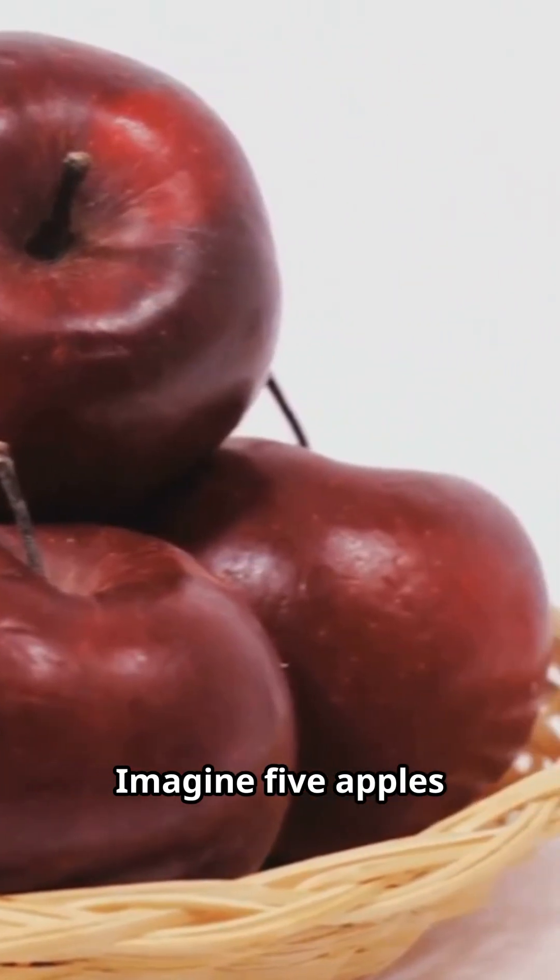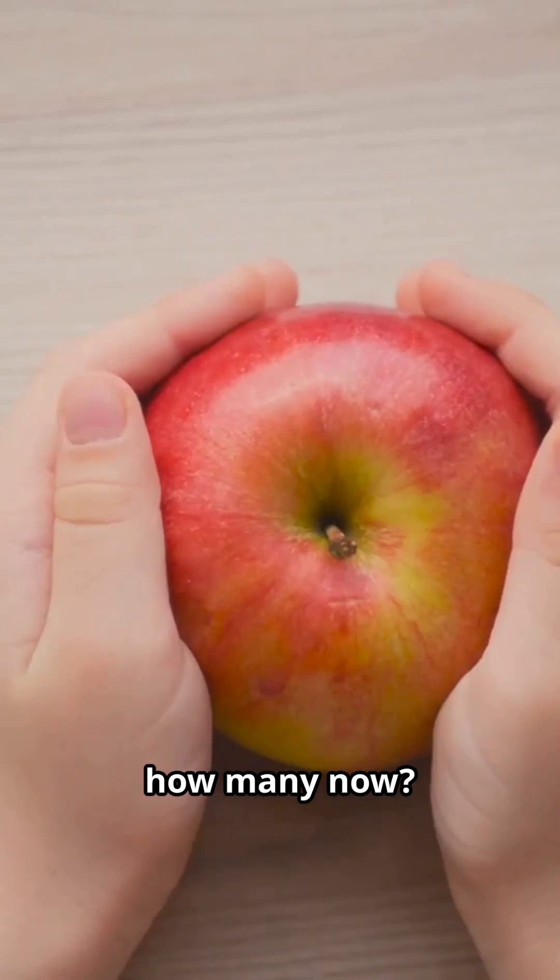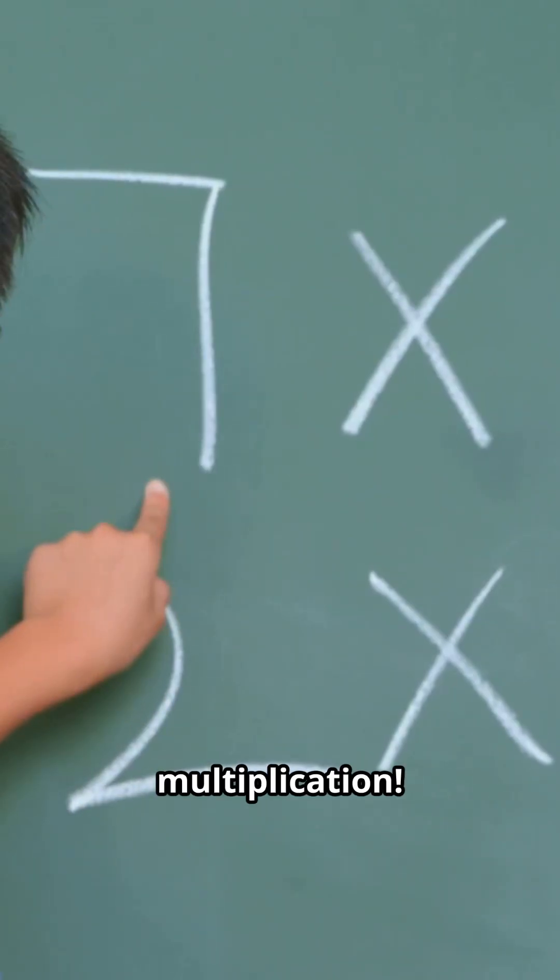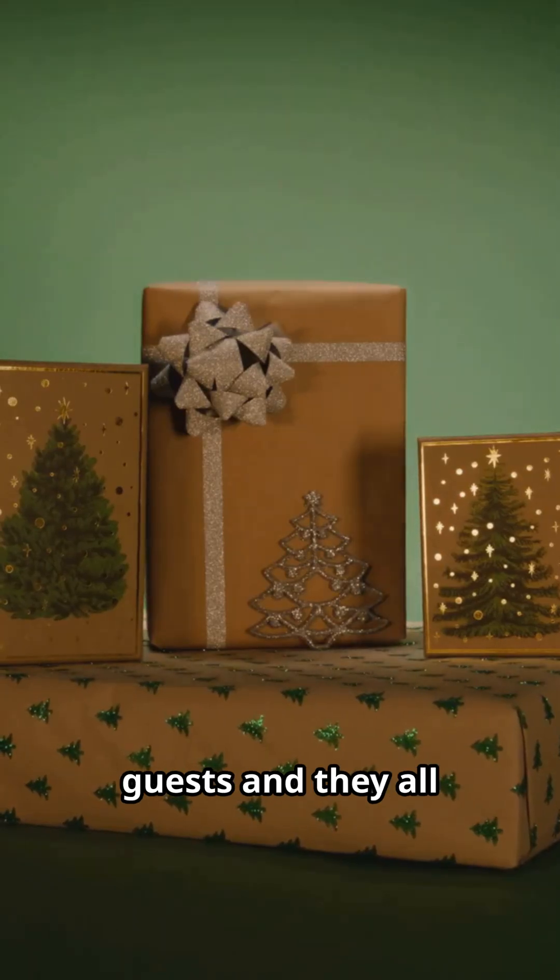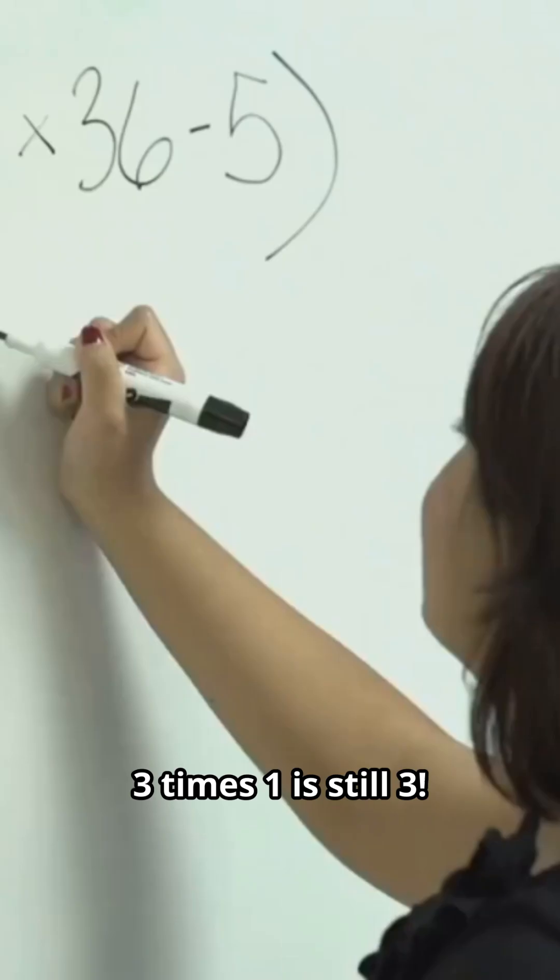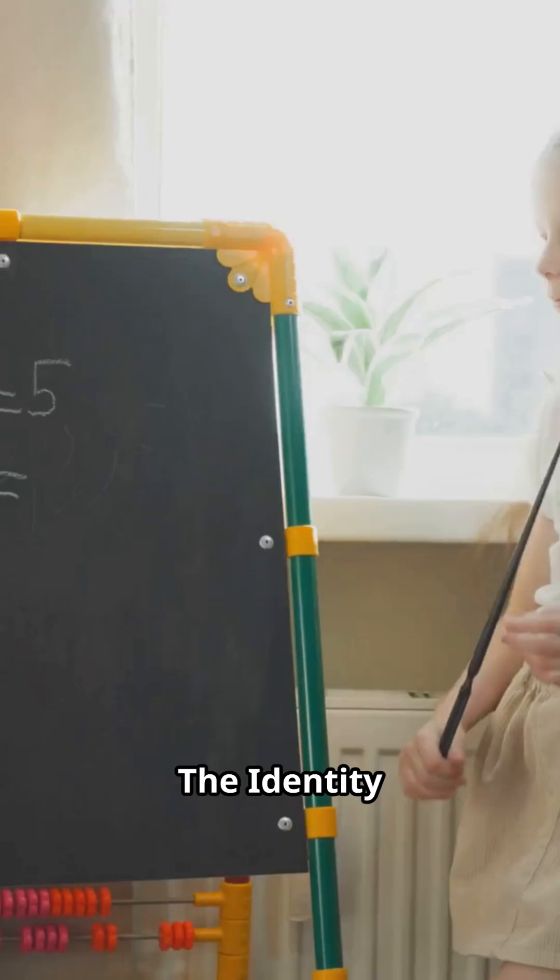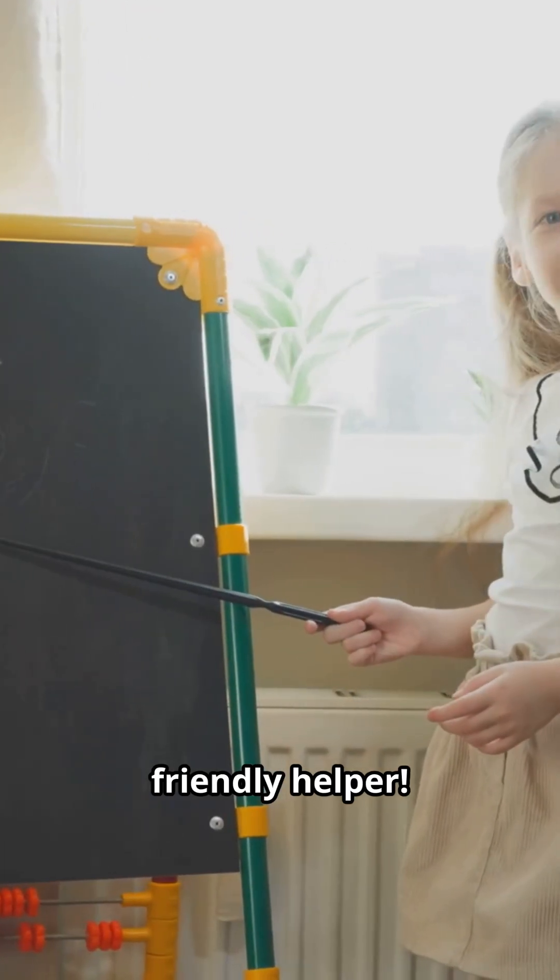Imagine 5 apples on a counter. Add 0 apples. How many now? Still 5. Now multiplication. You invite 3 dinner guests and they all RSVP as single. 3 times 1 is still 3. The identity property is like a friendly helper. It keeps numbers the same when you use 0 for addition and 1 for multiplication.